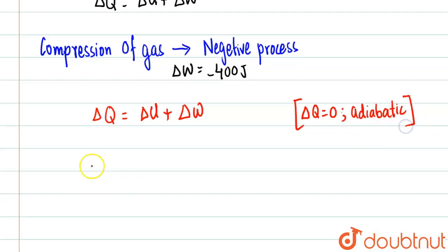Got it? Adiabatic process, there is no heat change. So what we'll get from here is ΔU must be equal to minus ΔW. This is what we're going to get.